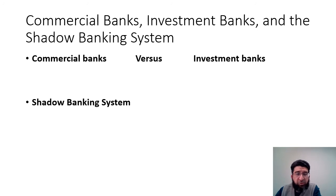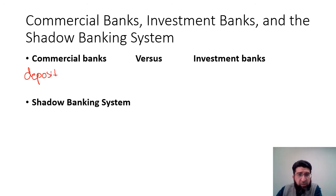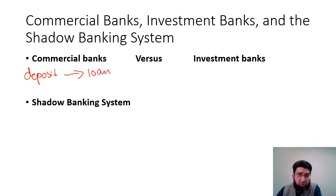The most important financial institutions include commercial banks and investment banks. A commercial bank provides savers with a secure place to invest their funds — we deposit money in commercial banks and they then loan those funds to businesses, governments, or other organizations. From these loans, an interest is received, part of which is paid back to deposit holders.